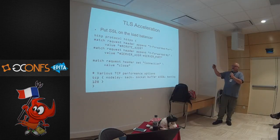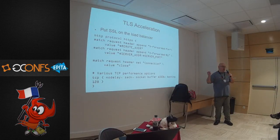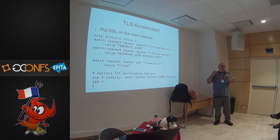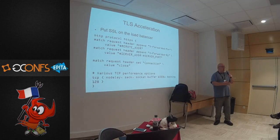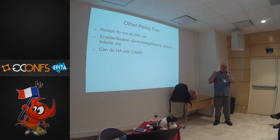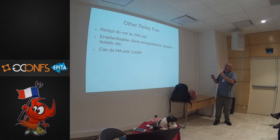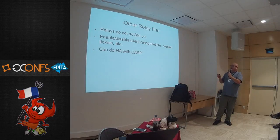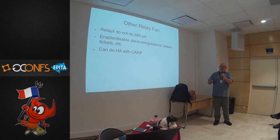Here's a config where you put your TLS on the load balancer and take it off the web server. These days TLS acceleration is not as desperate a need as it once was; however, if you're stuck and the new hardware hasn't arrived and you need to get some load off the web servers, it's nice to have the option to move that load elsewhere. Other things on relays: they do not do SNI yet, there is a rewrite in progress to work on that. You can enable and disable client-side renegotiations, session tickets, etc. You can do high availability with CARP.